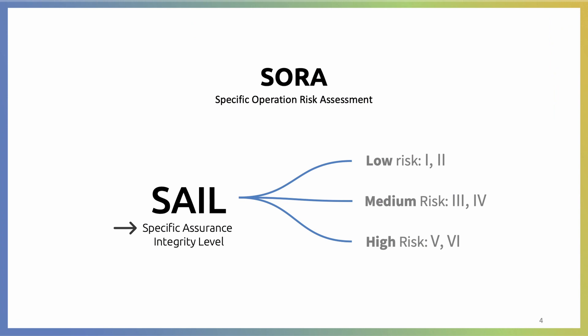If we get a SAIL number one or two, we're going to have a low risk operation. If we get a three or four, it's going to be medium. And if we have five or six, we're going to have a high risk operation.